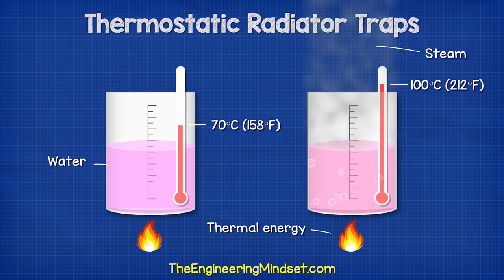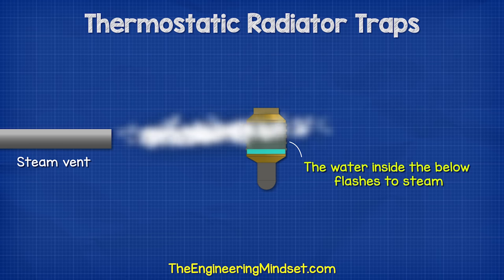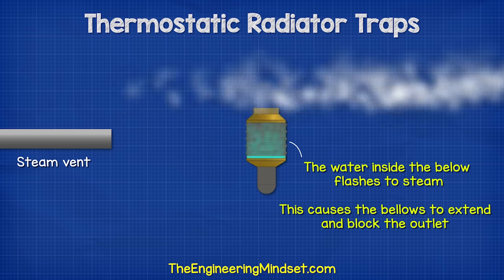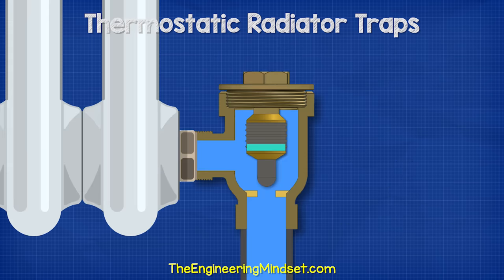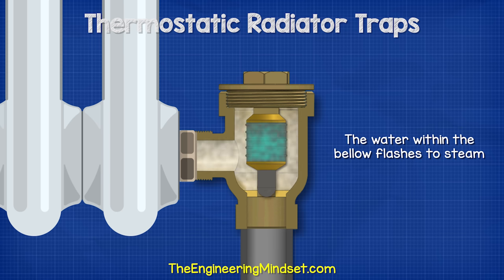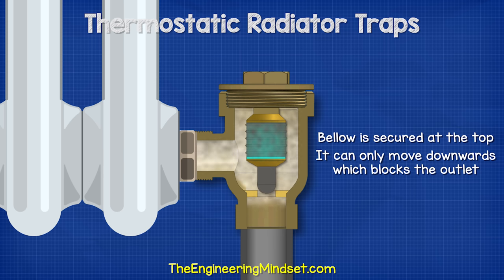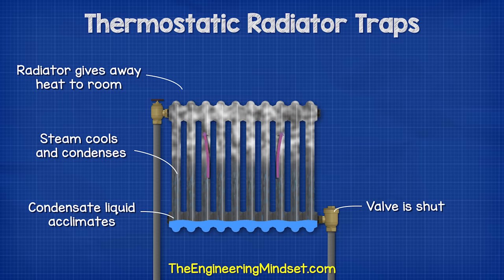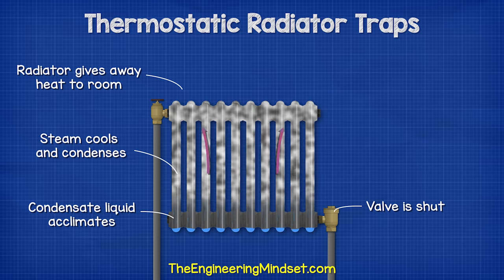Steam exists above 100°C (212°F), which is above the boiling point of water. When steam comes into contact with the bellow, the water inside is heated and flashes into steam almost instantly, causing a rapid increase in volume that forces the bellows to extend, blocking the outlet of the valve. On system startup the bellow is open and the trap is full of condensate. As steam enters the trap it heats the bellow, the water inside flashes to steam, pressure inside the bellow increases, and since the bellow is secured at the top it can only extend downward — plugging the outlet and stopping steam from flowing into the condensate line. This gives the steam in the radiator a chance to give away its heat to the room, then cool down and condense into a liquid.